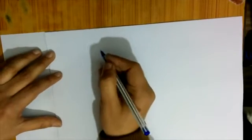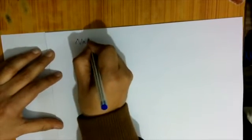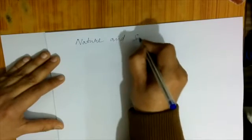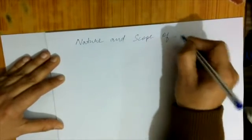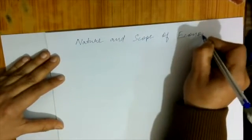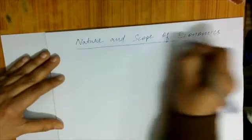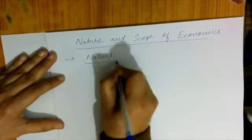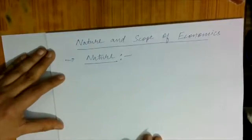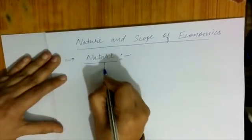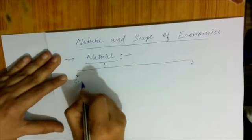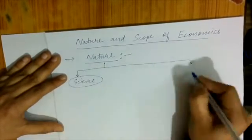After the definitions, our main concept is Nature and Scope of Economics. What are the nature and scope of economics? These are two different questions. Regarding nature, at the plus-two level the answer is: Economics is both a science as well as an art.